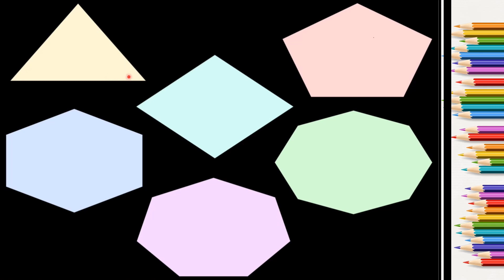Poly means many and gon means sides. So the shapes which have many sides are called polygons. It can be a triangle, a square, a rectangle, a pentagon, an octagon, or a hexagon — it can have any number of sides. But it has to be a closed figure and should not have curves.